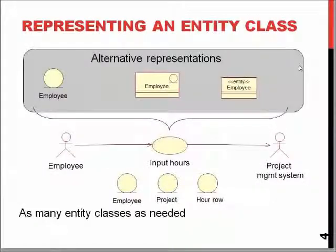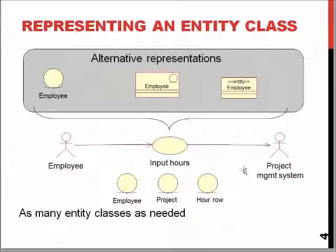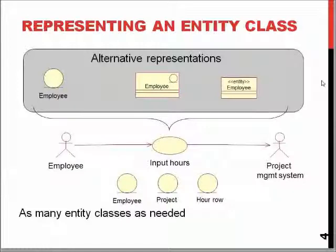In the entity class representation there are a couple of ways to represent the entities. It's usually a circle with a line underneath it, and this symbol is replicated in several ways, or it's marked with a separate stereotype following the stereotype model.